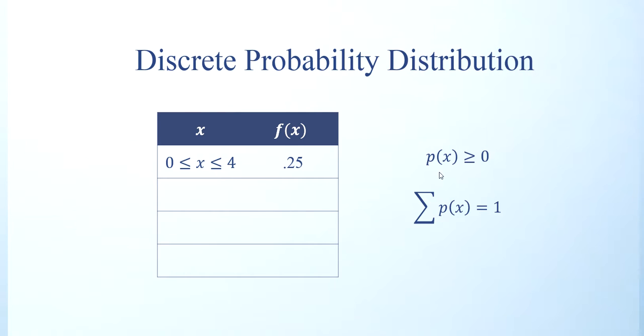Going back to the discrete distribution, these two probability conditions must satisfy in case of any discrete probability distribution. That means total probability must be equal to 1, and each of the probability must be greater than or equal to 0.